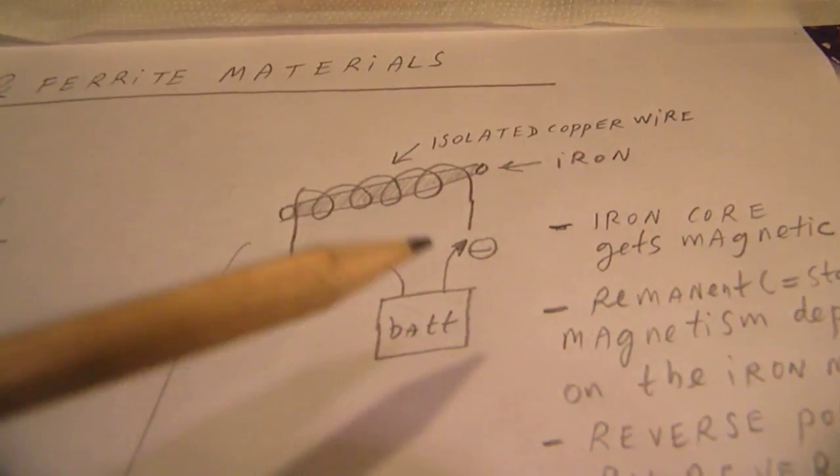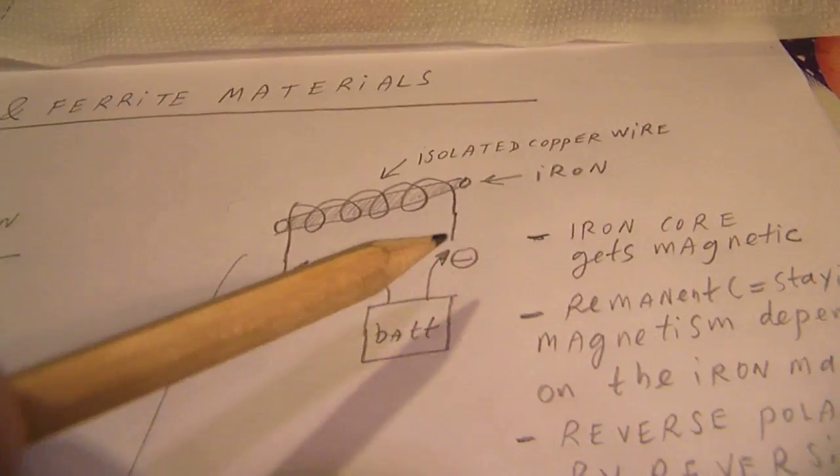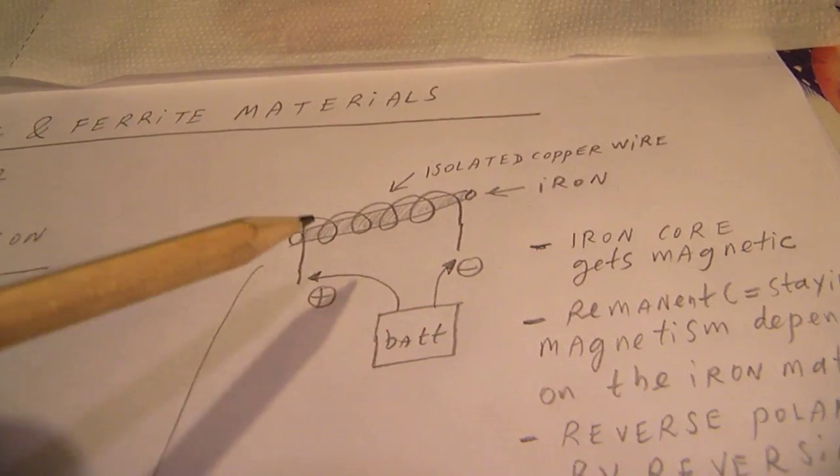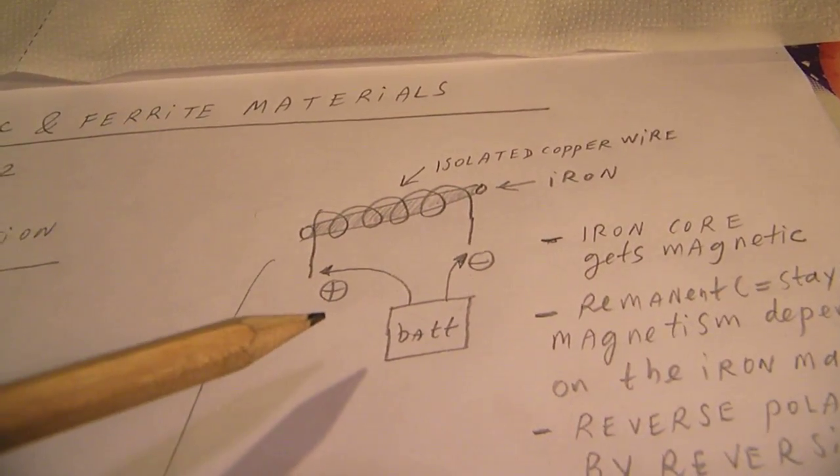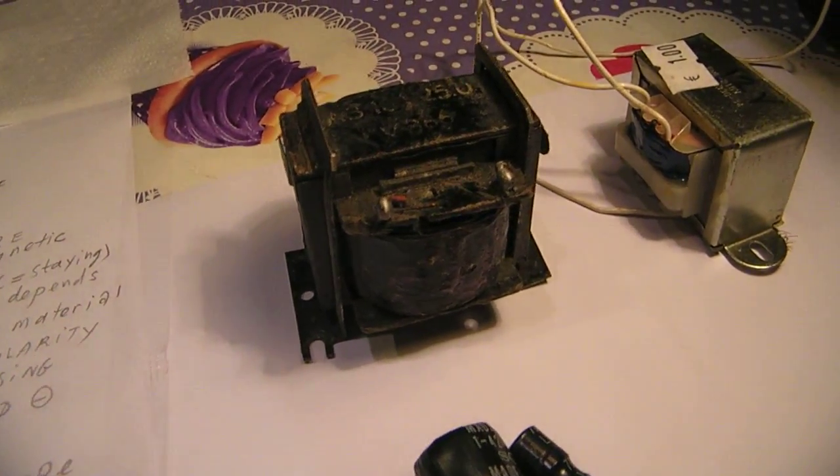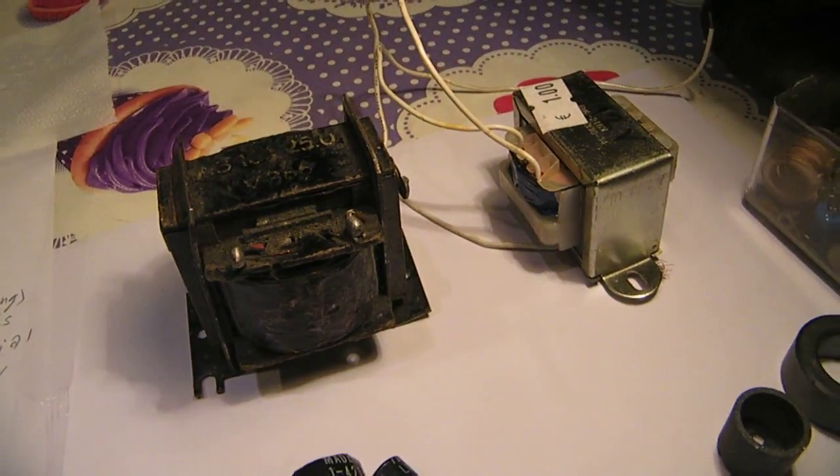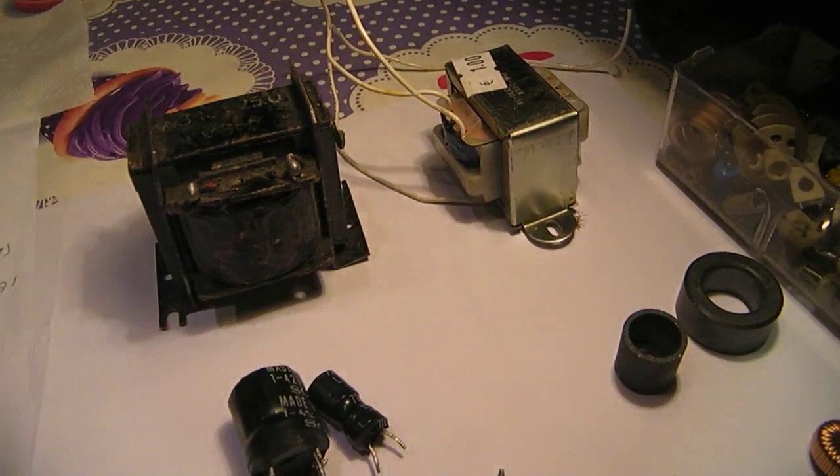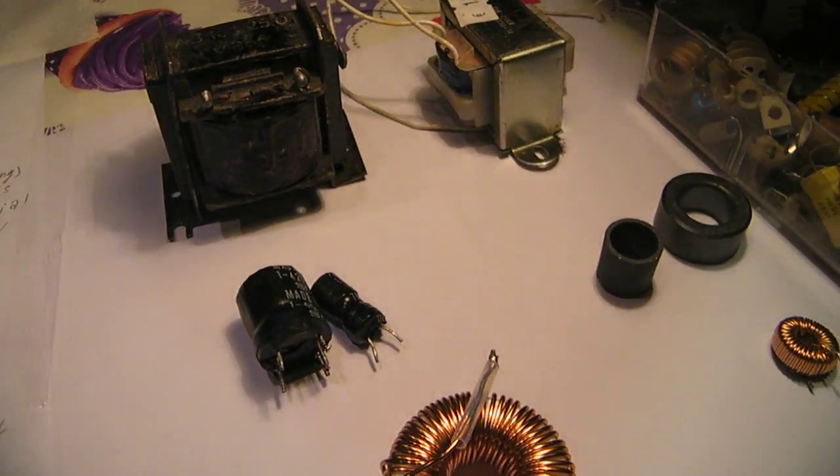But when we reverse the voltage and the current, the poles change. And that's also important, because in radio circuits we always have to do with changing magnetic fields on a certain frequency.